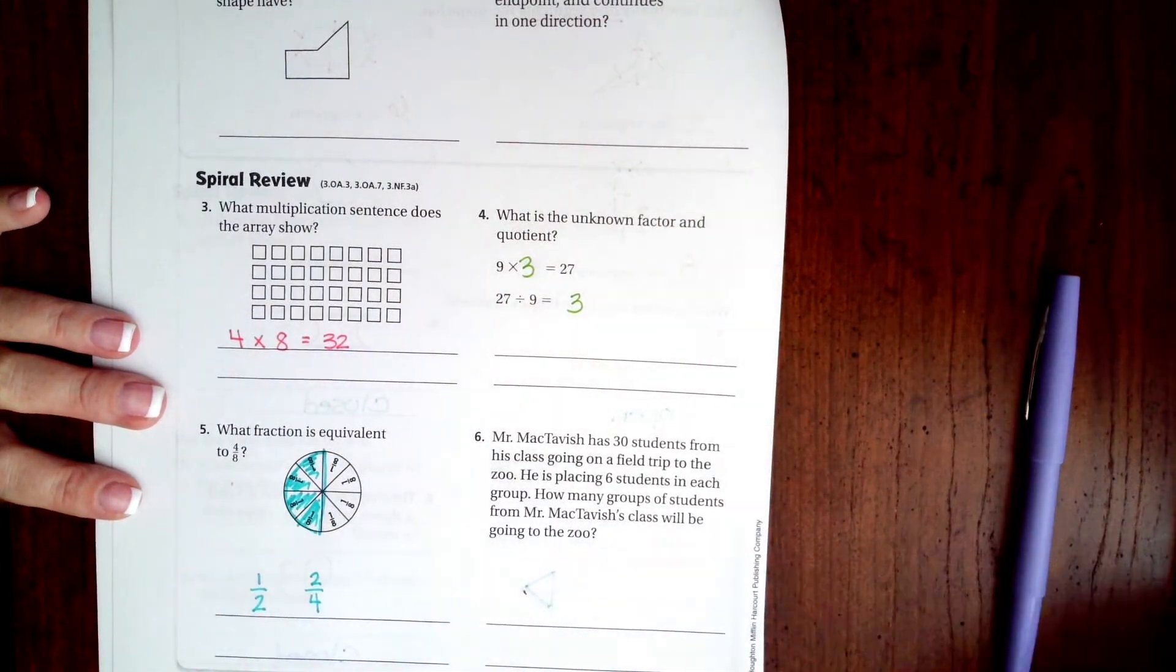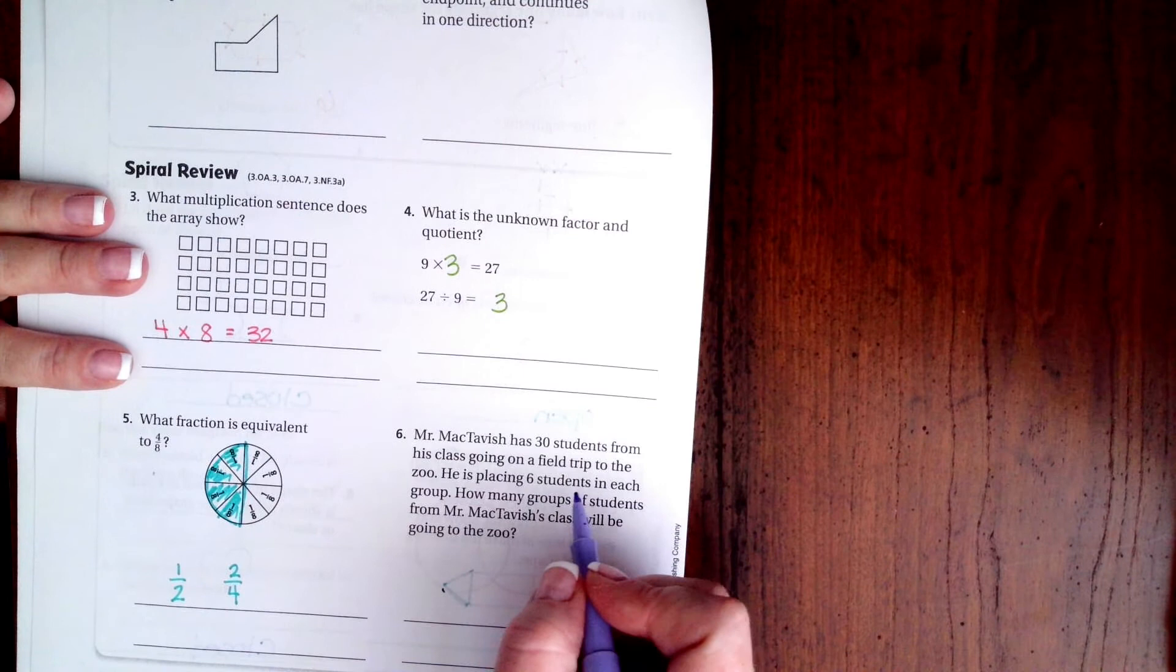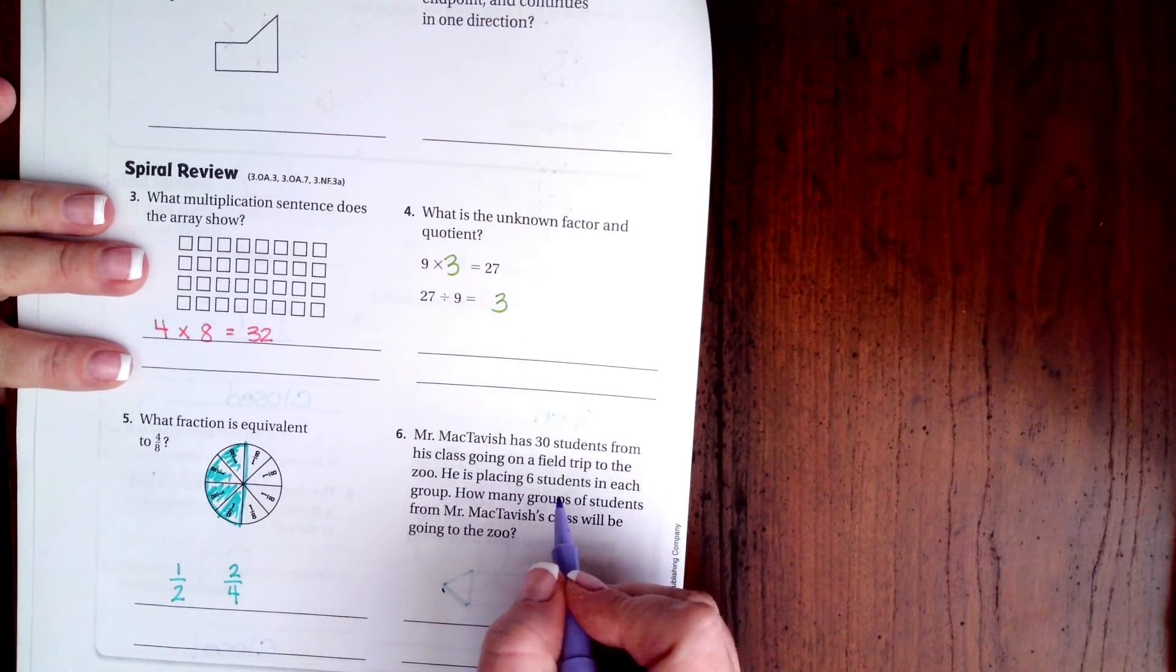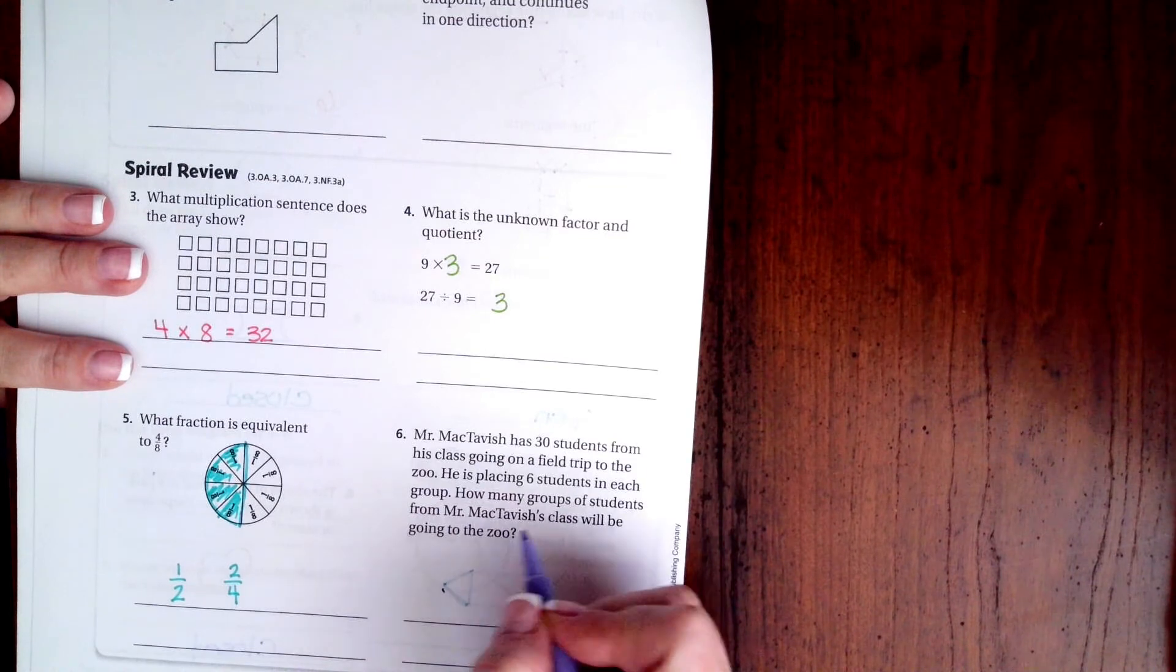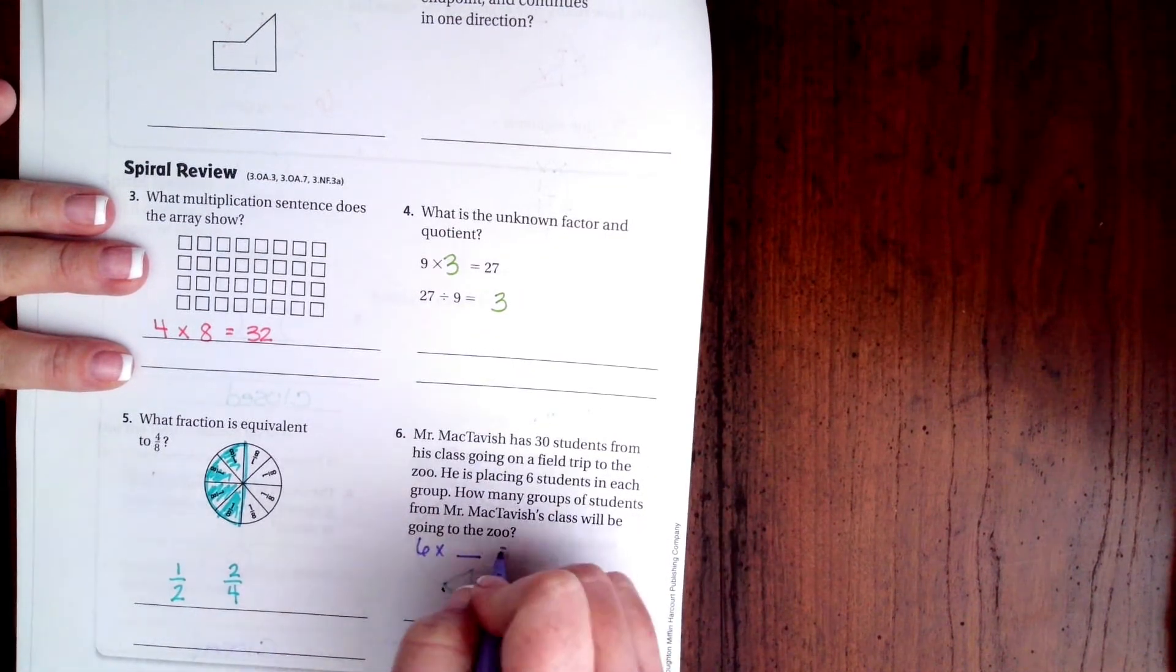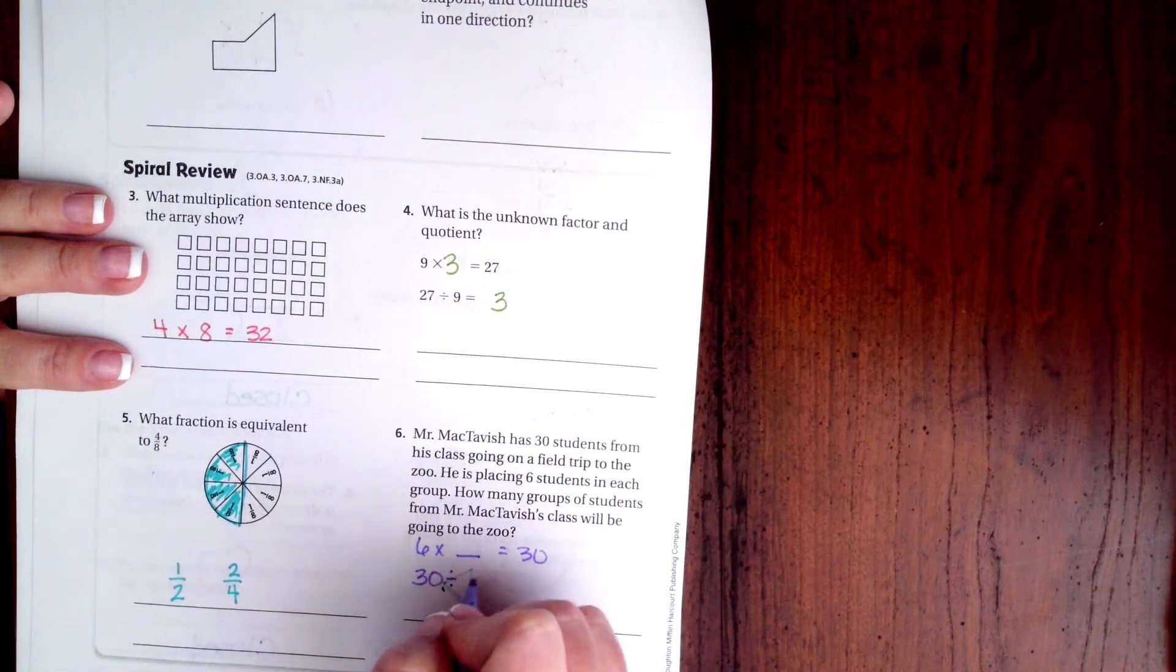You guys know how to do that now. All right, Mr. McTavish has 30 students from his class going on a field trip to the zoo. He's placing six students in each group. How many groups of students? So six times blank equals thirty, or thirty divided by blank, or divided by six equals blank, either way.